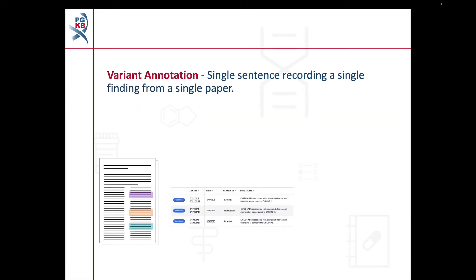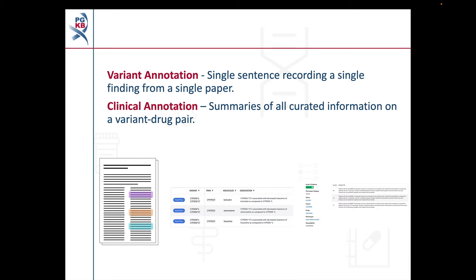We'll begin with a quick refresher on how variant annotations and clinical annotations are linked. A variant annotation is a single sentence which records a single finding from a single paper, while clinical annotations bring together variant annotations and other pieces of curated evidence to summarise what's known about a particular variant-drug phenotype relationship. We assign a level of evidence to all clinical annotations to indicate the strength of the underlying evidence base.